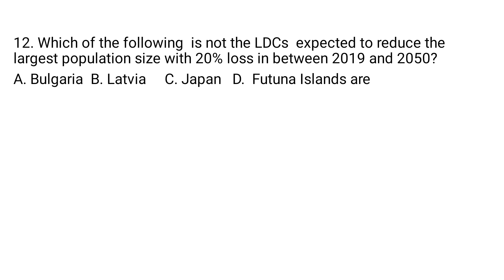Question 12: Which of the following is not among the least developed countries expected to reduce their largest population size by 20% between 2019 and 2050? A. Bulgaria. B. Latvia. C. Japan. D. Fortuna Islanders. Bulgaria, Latvia, and Fortuna Islanders are expected to decrease their population size by 20% between 2019 and 2050, but Japan is not. Thank you, students, for watching. Goodbye.